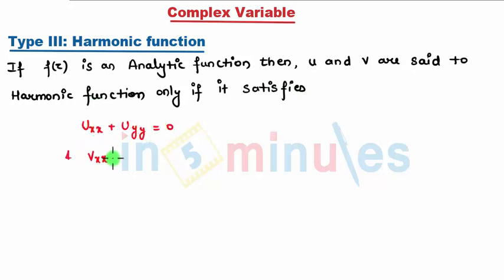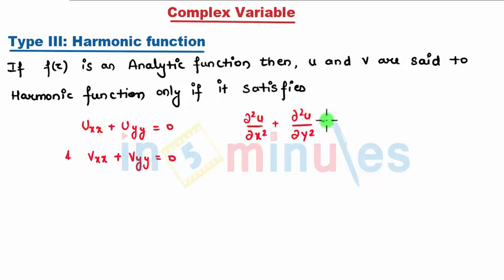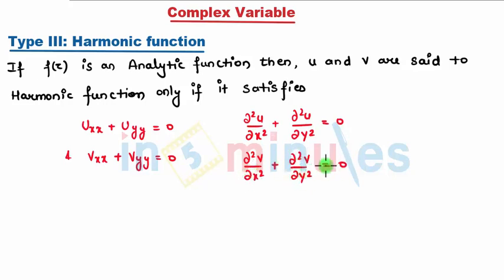We write this as: ∂²u/∂x² + ∂²u/∂y² = 0, and similarly ∂²v/∂x² + ∂²v/∂y² = 0. So let's prove this.